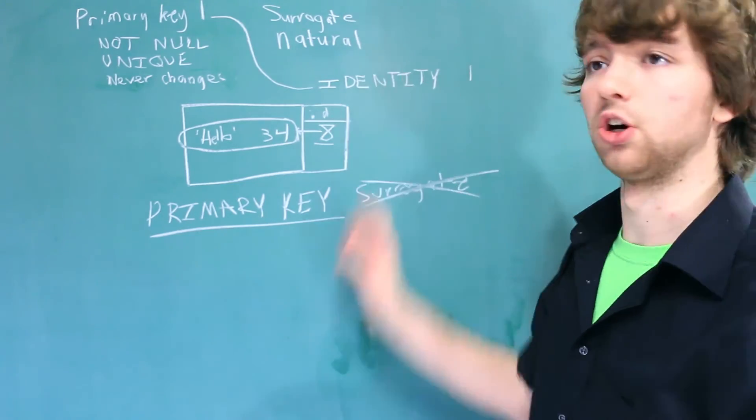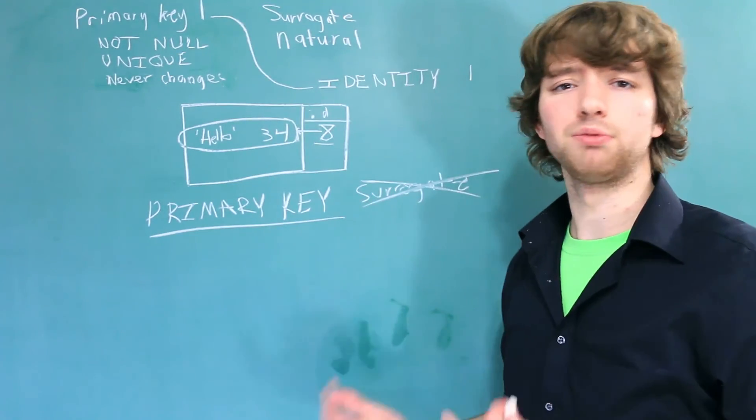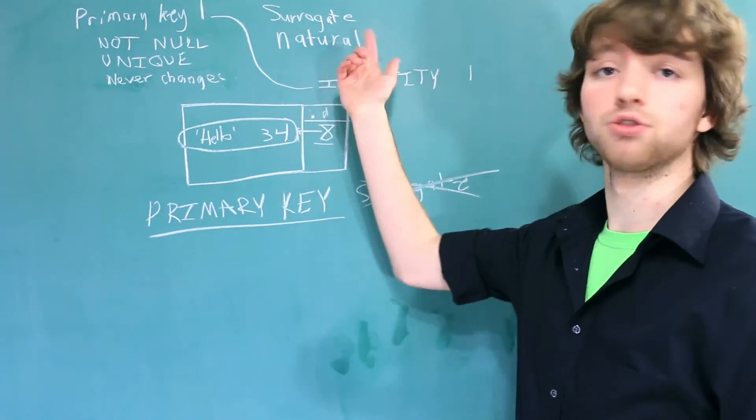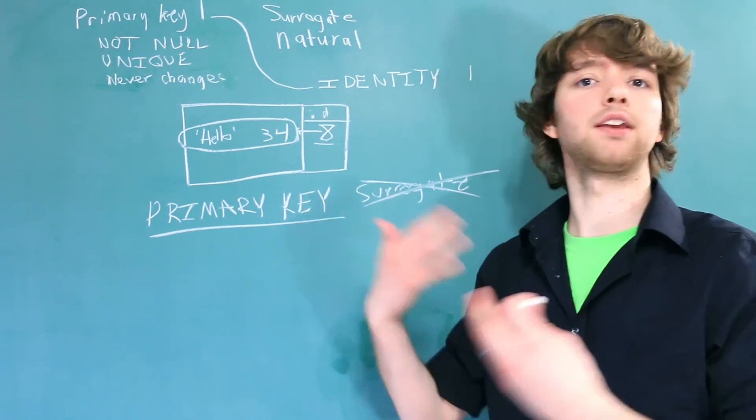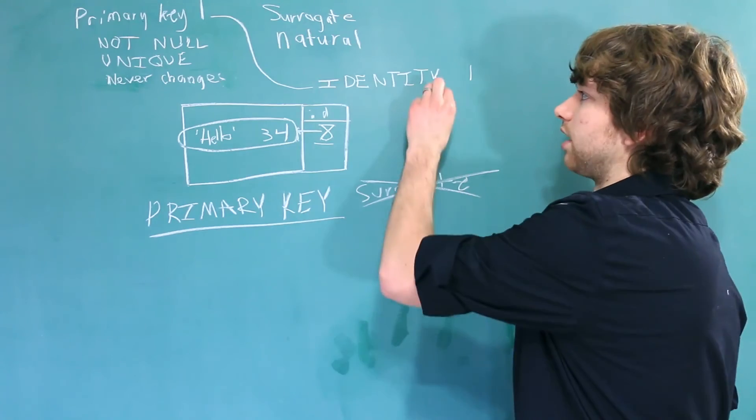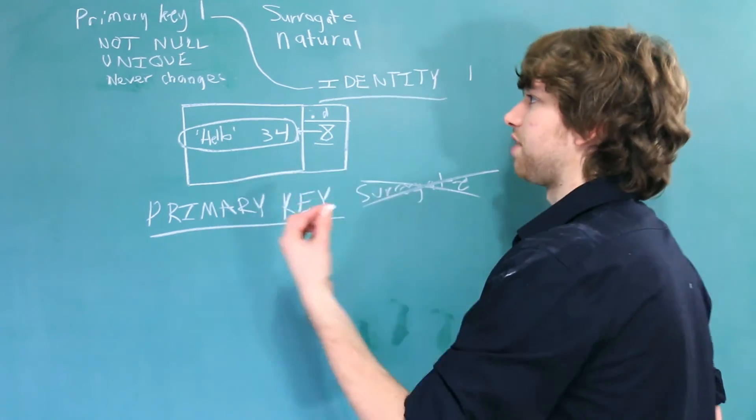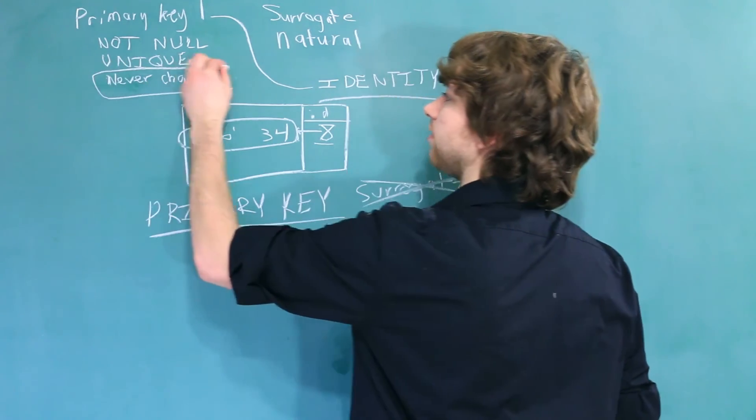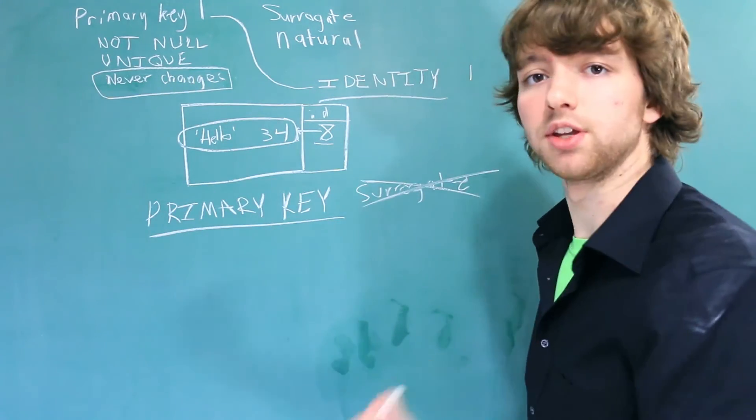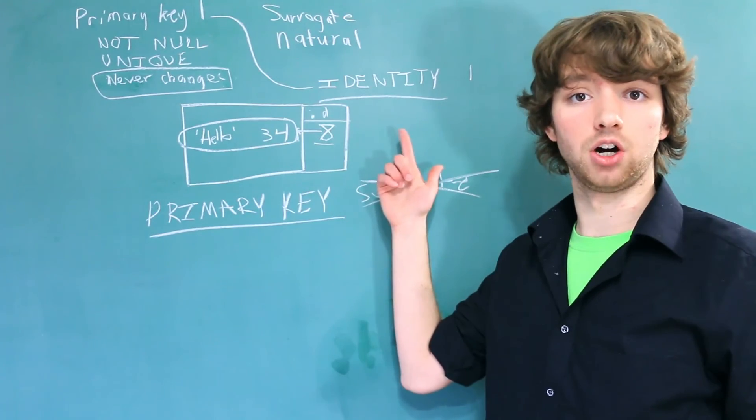You can actually have an identity on a different column. That would only really make sense though if you're using a natural key and you still needed a column that counts for you. In addition to counting, the identity will also prevent you from changing the data. So that is how we protect this one rule of never changing. We make sure that the column is labeled the identity column.